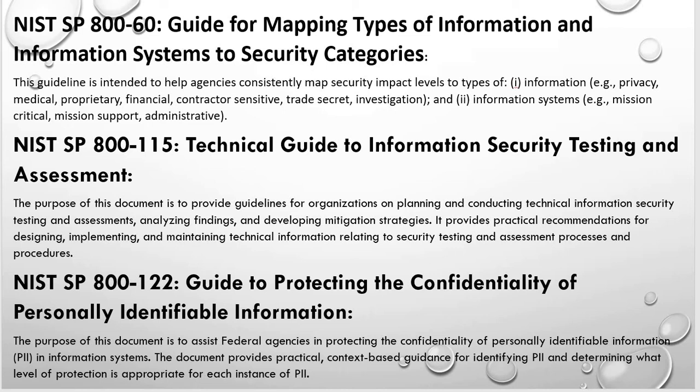NIST SP 800-115 is the Technical Guide to Information Security Testing and Assessment. There are three methods of testing security controls: examine, interview, and test. This publication guides you on how to perform those tests — including penetration testing, vulnerability scanning, and automated testing of security controls.